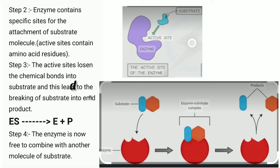Step 3. The active site loosens the chemical bonds in the substrate and this leads to the breaking of substrate into end product. Which means ki yaha par active sites chemical bond loose karti hai aur substrate break hokar end product form karta hai. Yaha par ES means enzyme substrate complex, E means enzyme molecule, and P is the end product.